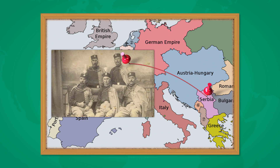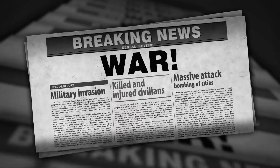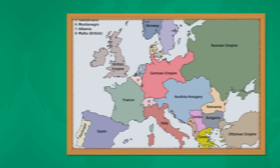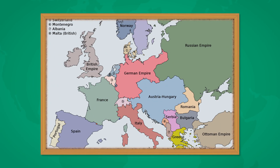Serbia agreed to most of the demands but suggested that an international conference be held to negotiate the remaining issues. Austria rejected this offer and declared war on Serbia. Russia's strong nationalism and pride for Slavic people closely tied them to Serbia. Seeing a potential to seize more land from the upheaval in the Balkan Peninsula, Russia mobilized troops to the Austrian border in support of Serbia, laying the last domino to trigger the series of events that would lead the world into war.